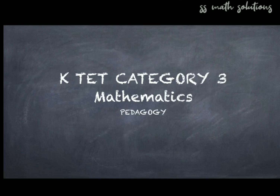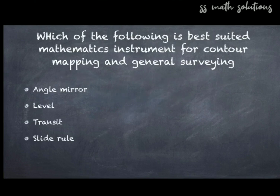Question 1: Which of the following is the best suited mathematical instrument for contour mapping and general surveying? Options: angle mirror, level, transit, slide rule. The answer is option two — Level — is the best suited instrument for contour mapping and general surveying.